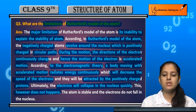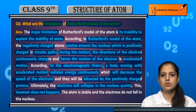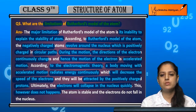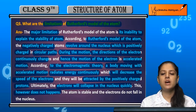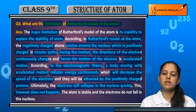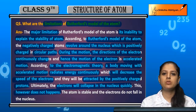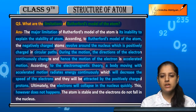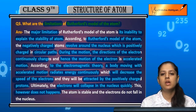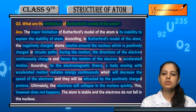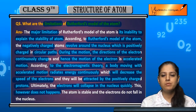This is the major limitation of Rutherford's model. They said that the electrons revolve and radiate energy, which means electrons should collapse into the nucleus. But it doesn't happen.